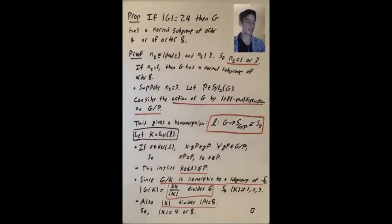And now a big idea is going to be to look at the kernel of this homomorphism. So let's understand what this kernel is. If X is in the kernel, what does that mean? Well, that means that the action of X on the left coset gP gives back the left coset gP for all three of these left cosets.